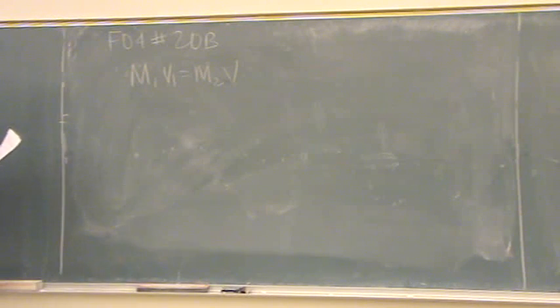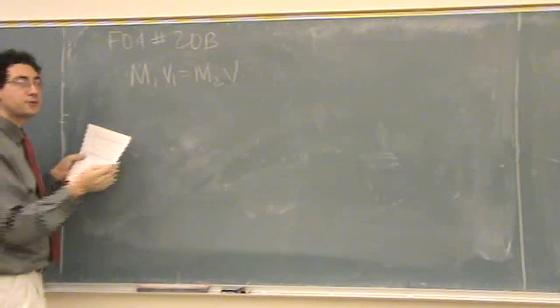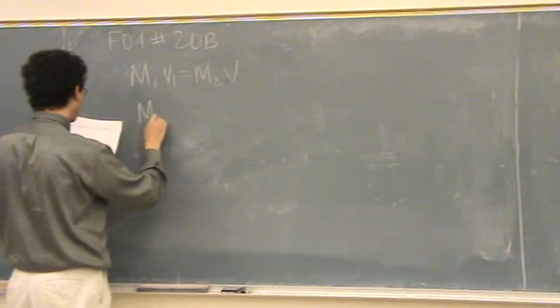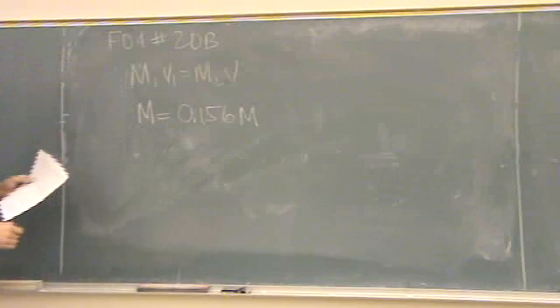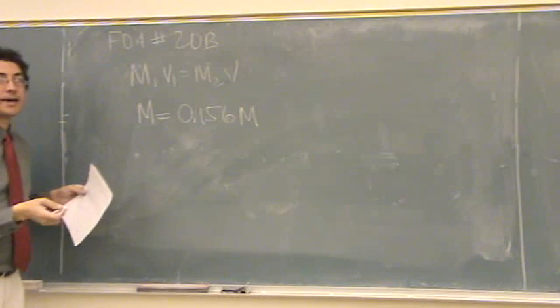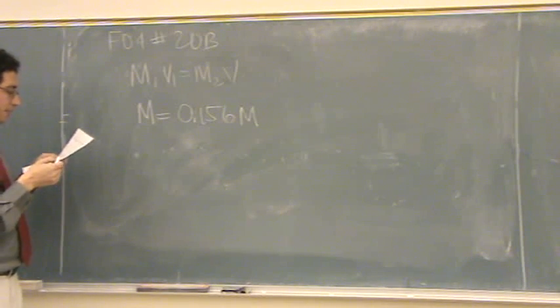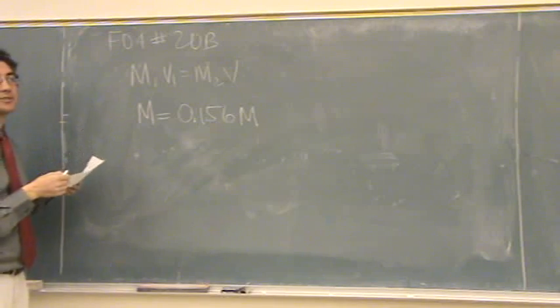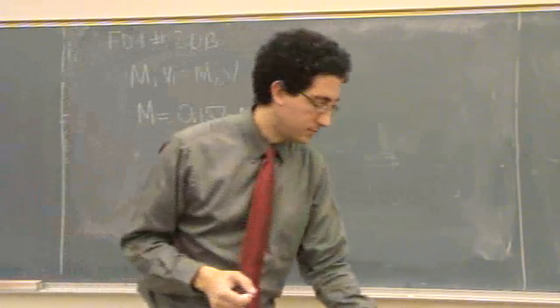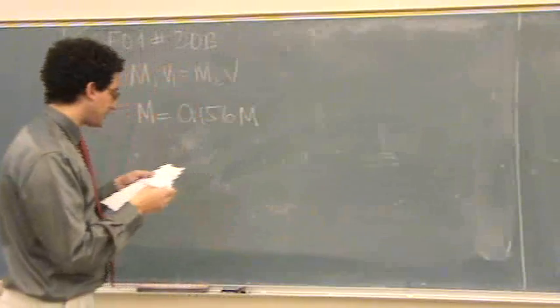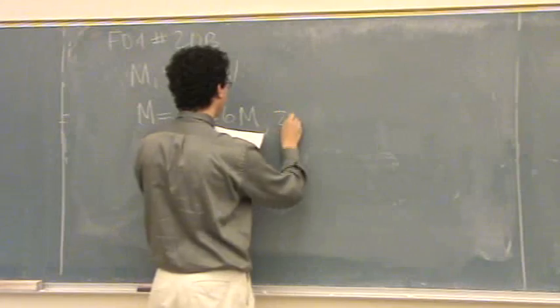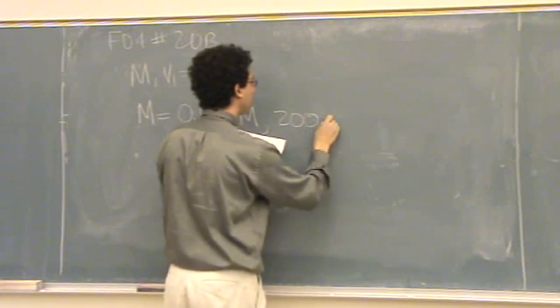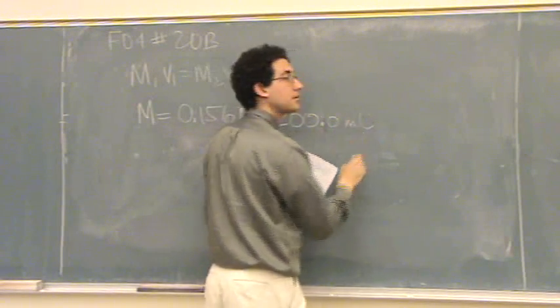And from part A to one-tenth its molarity. So assuming you got the first part right, it says the molarity is 0.156 molar. You want to go to one-tenth of that. How much water would you need to add to your solution? And let's see if it has the volume. It does have the volume. It's 200.0 milliliters.